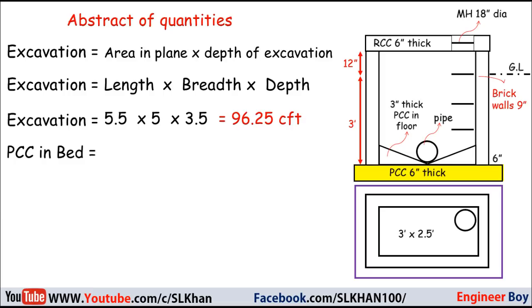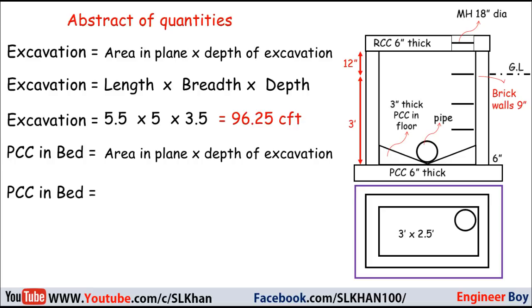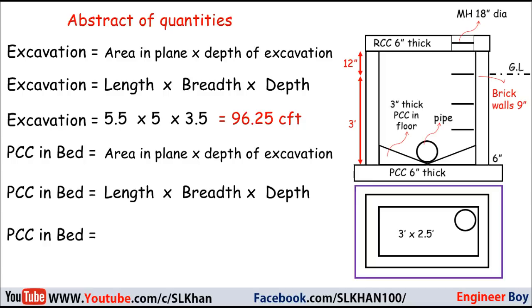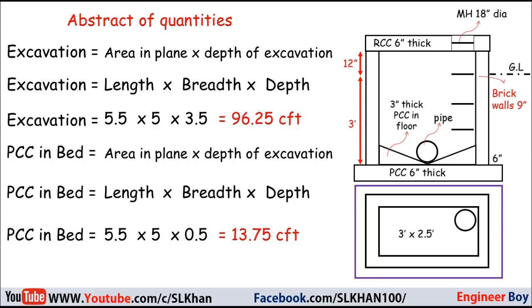Next, PCC in the bed is 6 inches thick. The plan dimensions are the same as excavation — length 5.5 feet and breadth 5 feet — but the depth is only 0.5 feet (6 inches) for the PCC layer thickness. Therefore PCC in bed = 5.5 × 5 × 0.5 = 13.75 CFT.